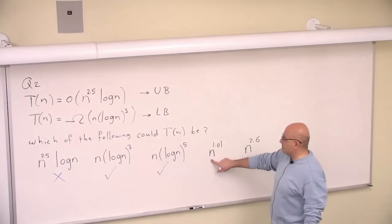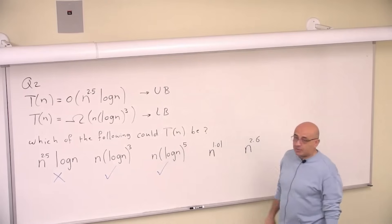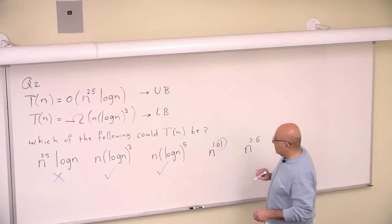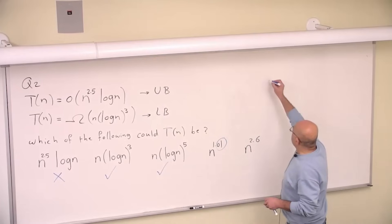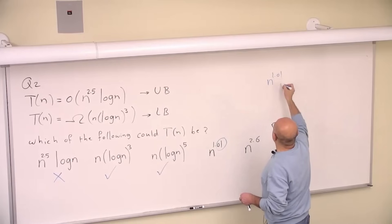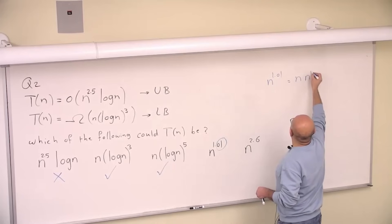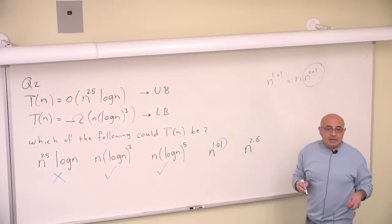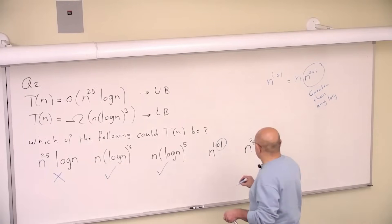How about this? So is this greater than or smaller than n log n to the power 5? This is greater than. It has this little polynomial — this 0.01 is greater than any logarithm. So n to the power 1.01 equals n multiplied by n^0.01, and this thing is greater than any logarithm. So this is yes.